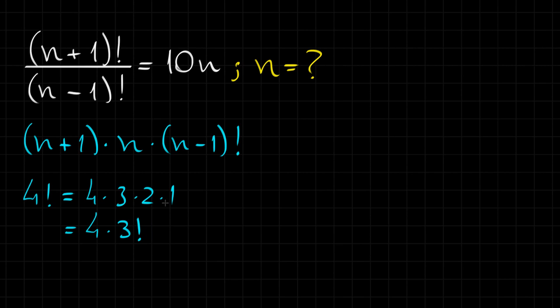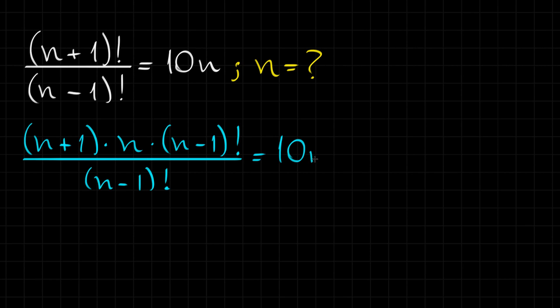So, this is the same thing that I did here. So, we can do this with no problem. Alright? And then, after that, right on the denominator of this fraction, we can put this (n-1) factorial. And this is equal to 10 times n, right?